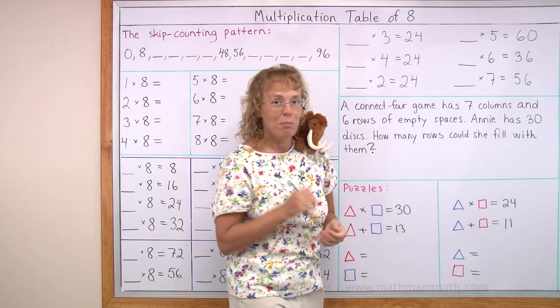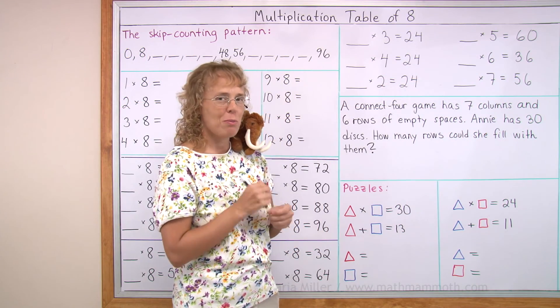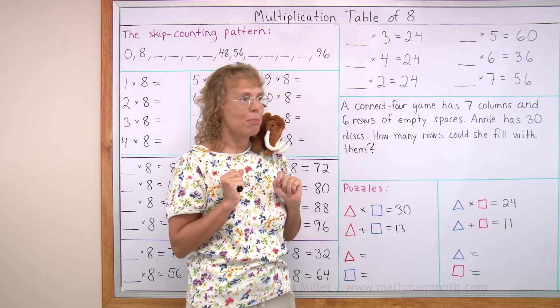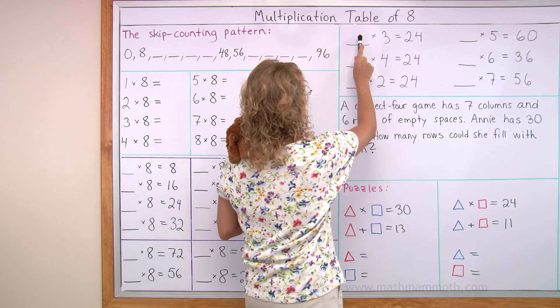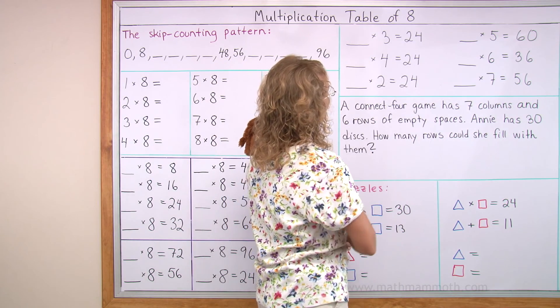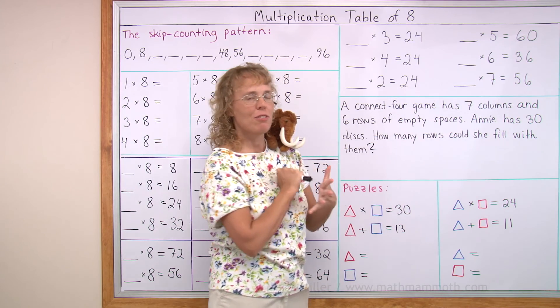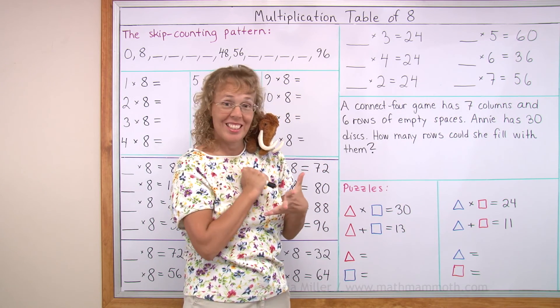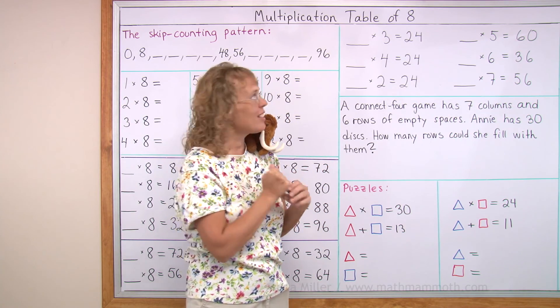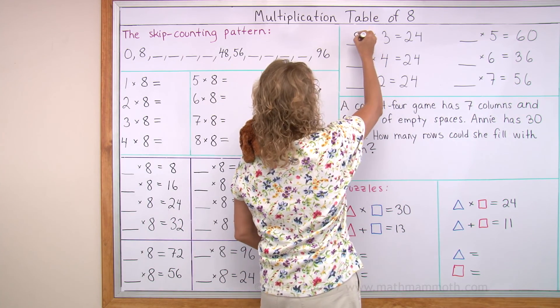Over here we have a few missing factor problems. You remember factors are the numbers we're multiplying. So what number goes here? How many times 3 makes 24? You know, we just studied that because it's in the table of 8 too. It's 8. 8 times 3.